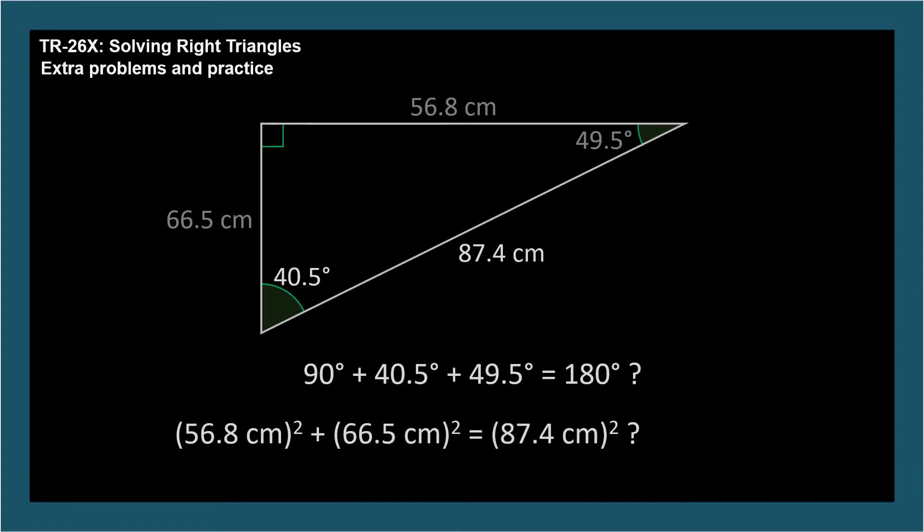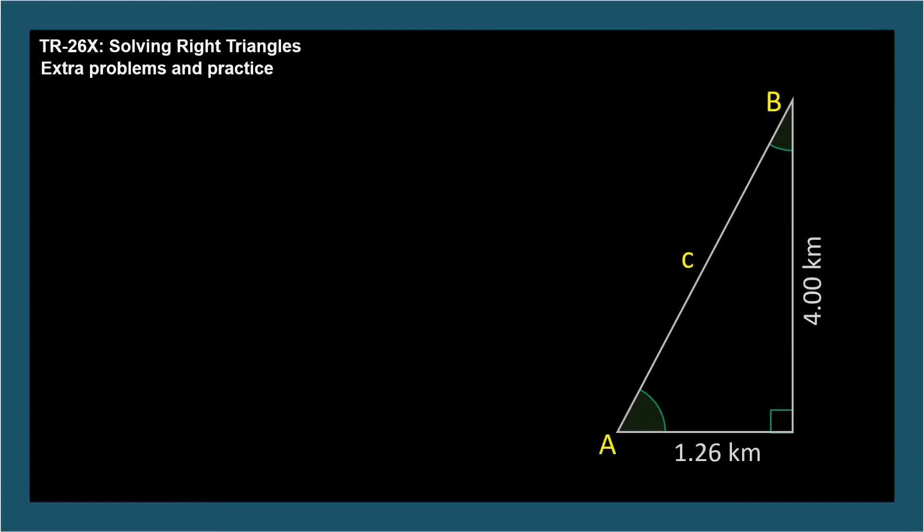Here's a triangle where we're given two sides and the only angle we know is the right angle. So we need to find one side and two angles. To solve this triangle, there are three smaller simple solutions to solve. How to find side c, how to find angle A, and how to find angle B.